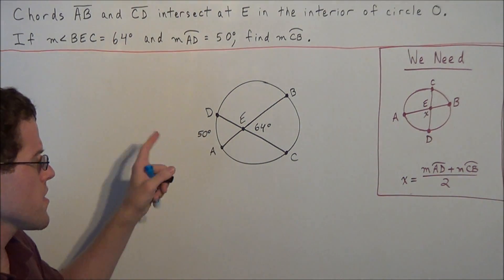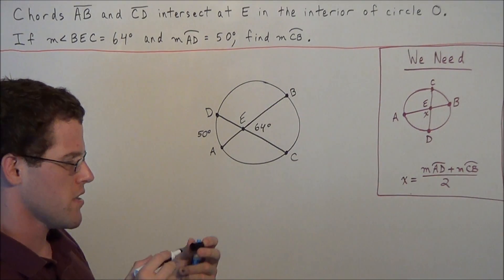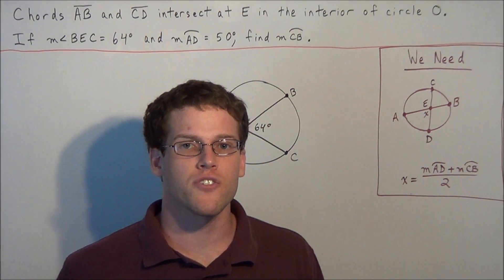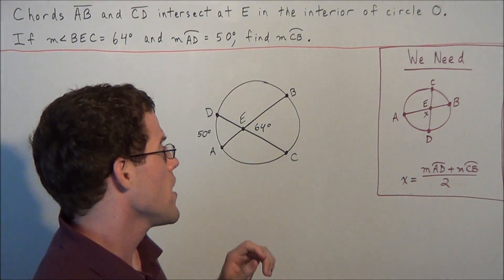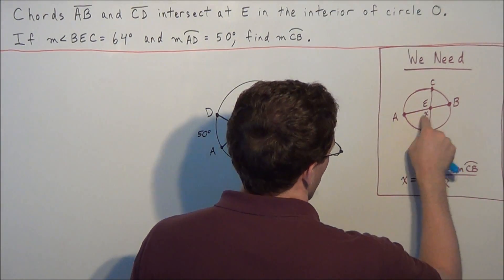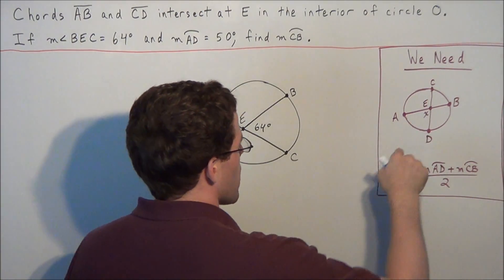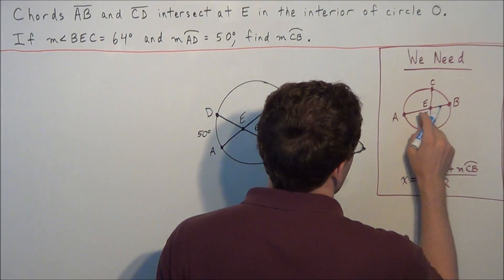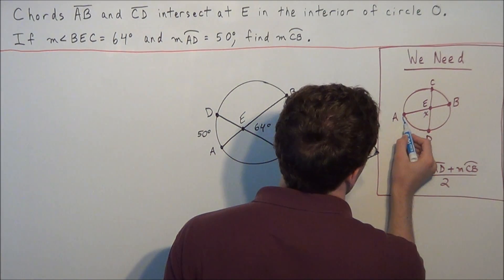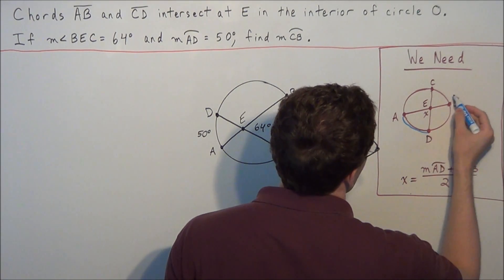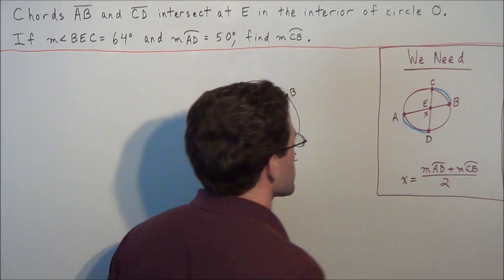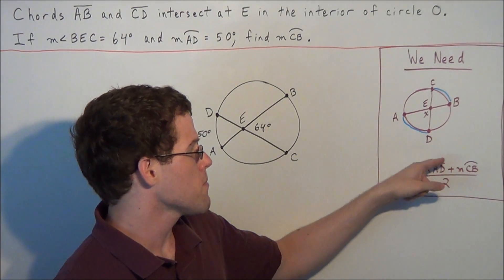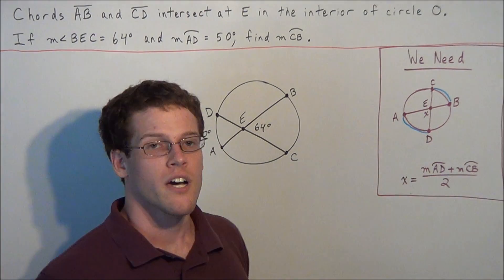So now we need to use this information to find the measure of arc CB. What we want to focus on is the following theorem: when we have two chords intersecting inside of a circle and we're targeting this angle denoted by X, we need to focus on the two arcs intercepted by these intersecting chords. That is, if we're targeting X, we're focusing on arc AD and arc CB. We can set up the equation: X equals the measure of arc AD plus the measure of arc CB, divided by two.